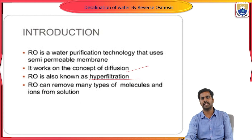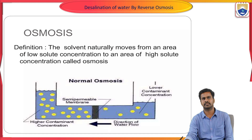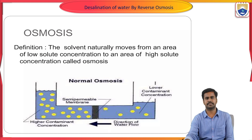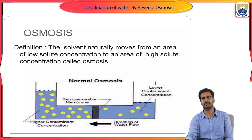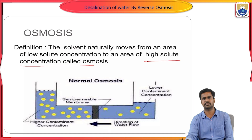Reverse osmosis can remove many types of molecules and ions from a solution. First, let us see what is osmosis. The solvent naturally moves from an area of low solute concentration to an area of high solute concentration — that is called osmosis.